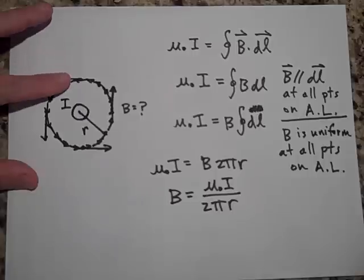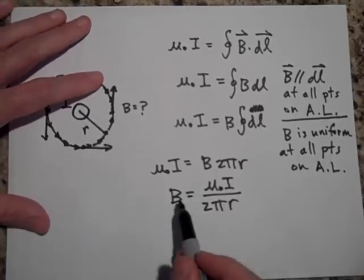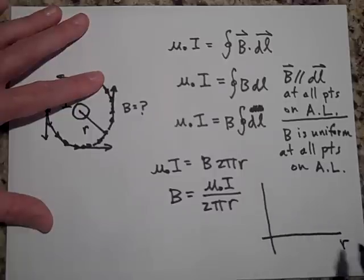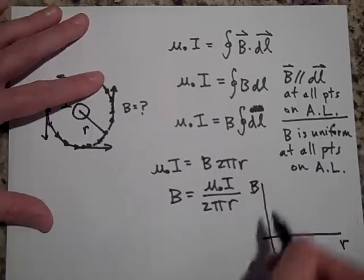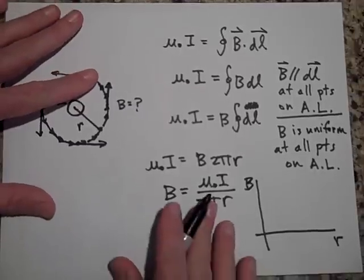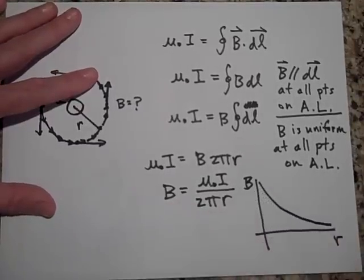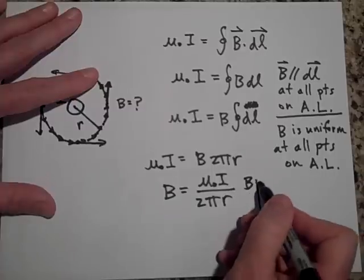And so if I were to graph this - what is B, how does B vary with r if I were to graph this? It looks like it does one of these. It's like a one over x graph.